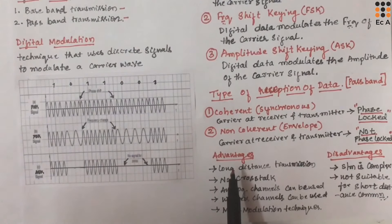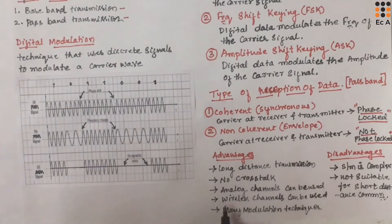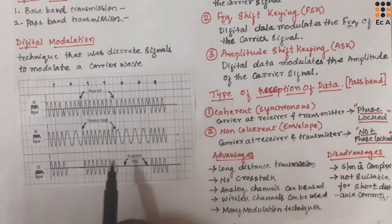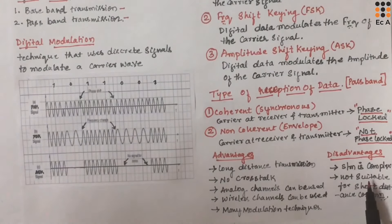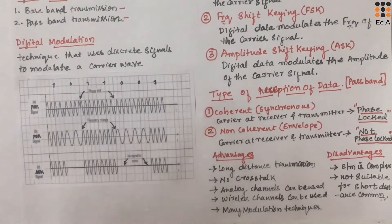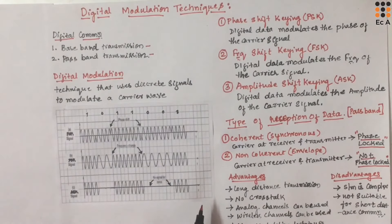Coming to the advantages of passband transmission: we can use it for longer distance communication, there is no problem of cross-talk in the signal, we can use analog channels for transmission, and it is very helpful for wireless communication using wireless channels. Also, there are many modulation techniques available for transmission. Coming to the disadvantages, the system is complex compared to other systems, and passband transmission is not suitable for shorter distance communication. This is about the introduction to digital modulation techniques.